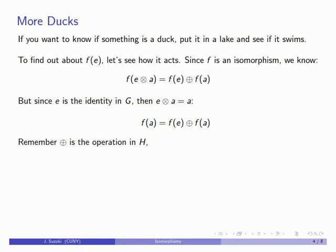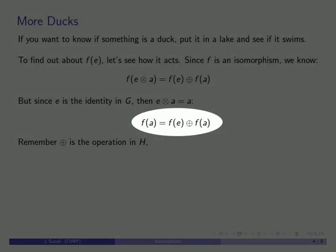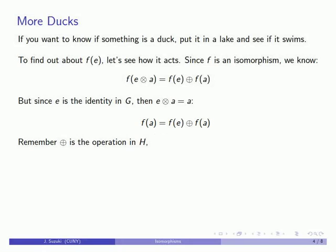Plus is the group operation in H, and so what I have is F of A is something plus F of A. Well, that looks an awful lot like the identity. And remember, the identity of a group is unique. So if something walks like the identity, quacks like the identity, and swims like the identity, it must be the identity. And so that tells us that F of E is going to be the identity in H.